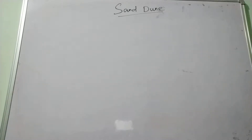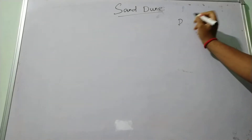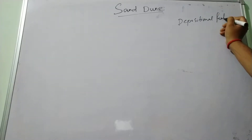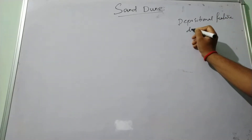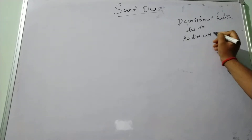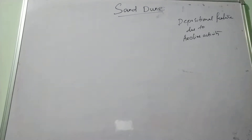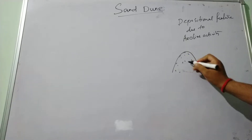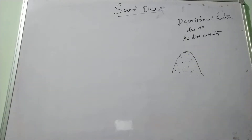Now we are going to discuss about sand dunes, which is one of the most important depositional features that occurs due to aeolian activity. In aeolian areas, heaps or mounds of sand are found by the depositional work of the wind, and this is known as sand dunes.